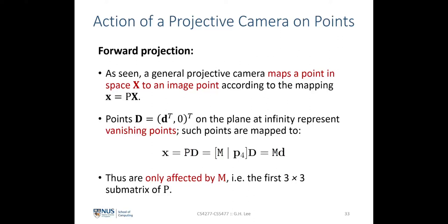Let's look at the action of the projective camera on points. We'll first consider forward projection, which is a simple mapping. Given a point in 3D space represented by X, the action by the projective camera is simply the multiplication of the projection matrix P and X, mapping the 3D point onto a 2D image coordinate x. Effectively, we are transforming a point in P3 space onto P2 space, and this works for any general point X.